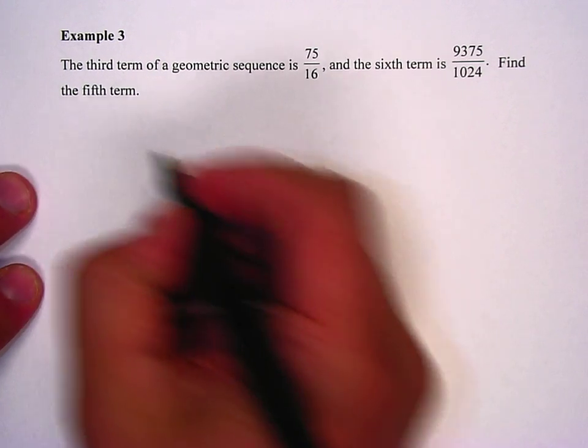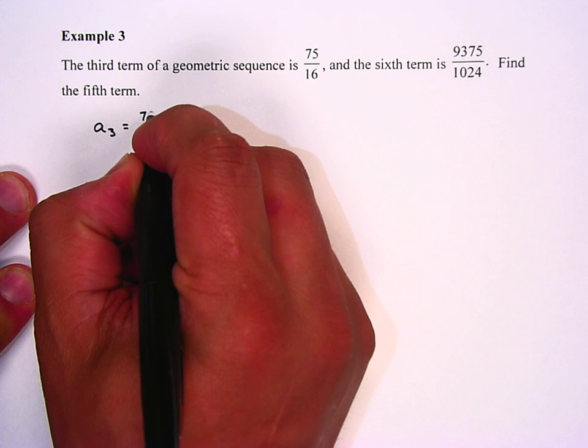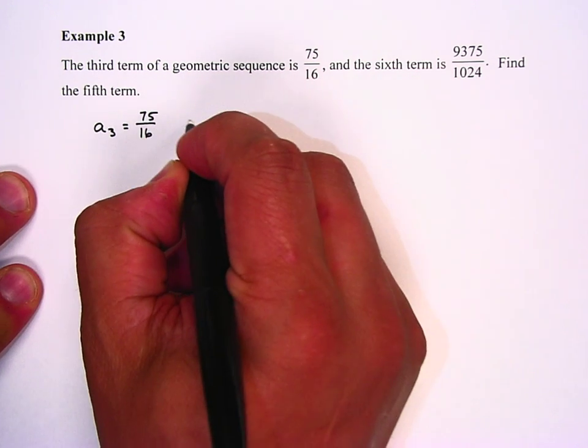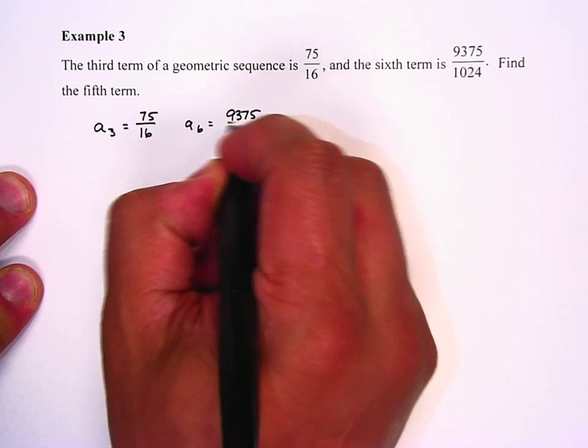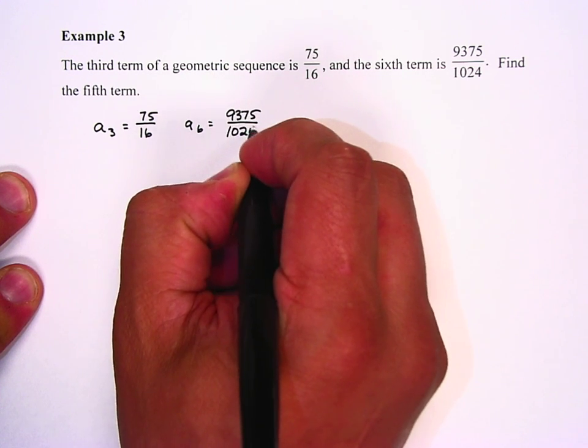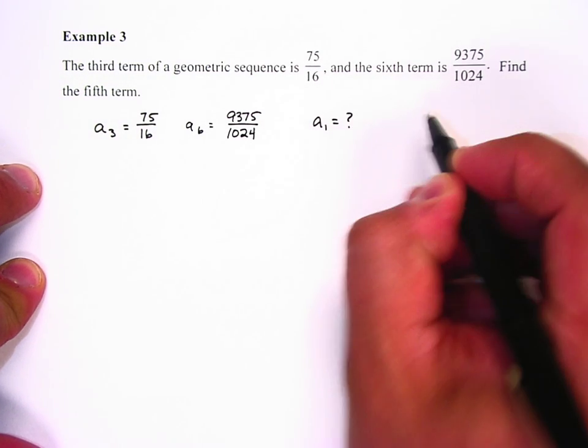And so what we have here is a system of equations that we're going to use. We know a sub 3 is 75 over 16. We know a sub 6 is 9375 over 1024. And what we need to do is we need to find a sub 1, which we don't know.